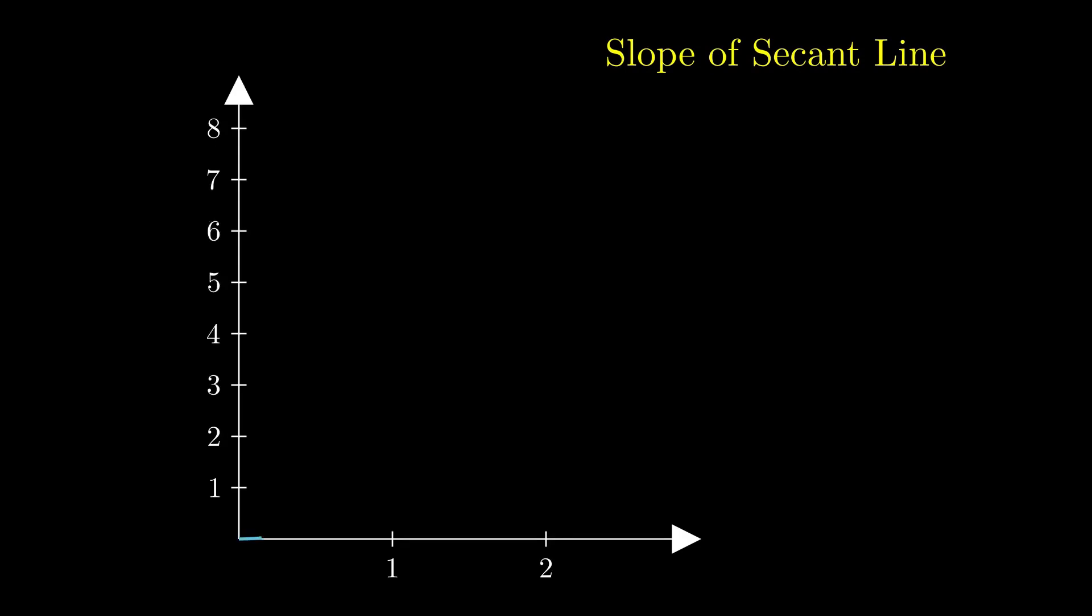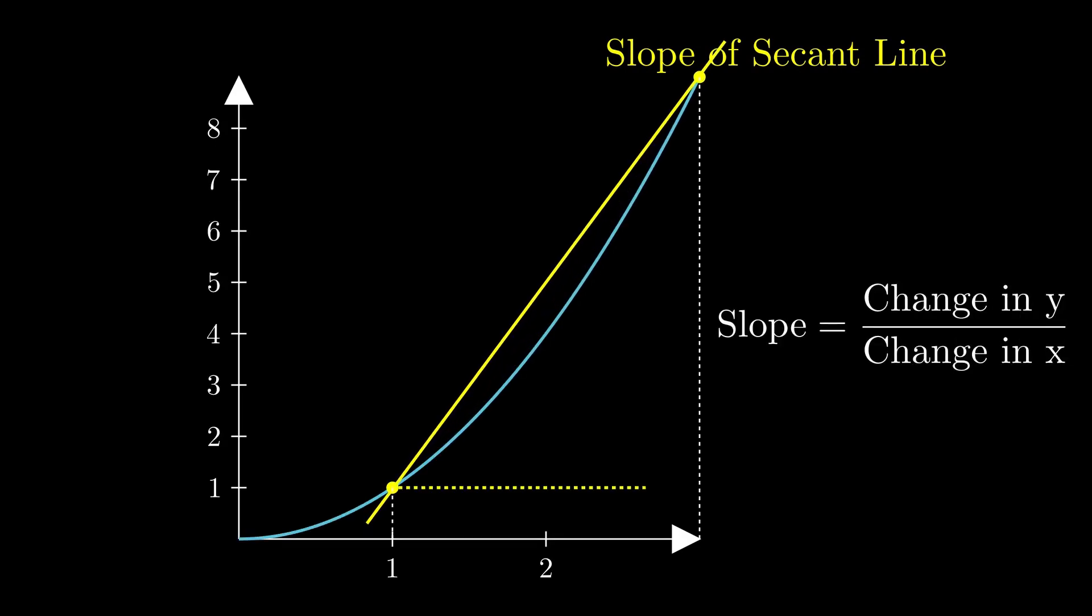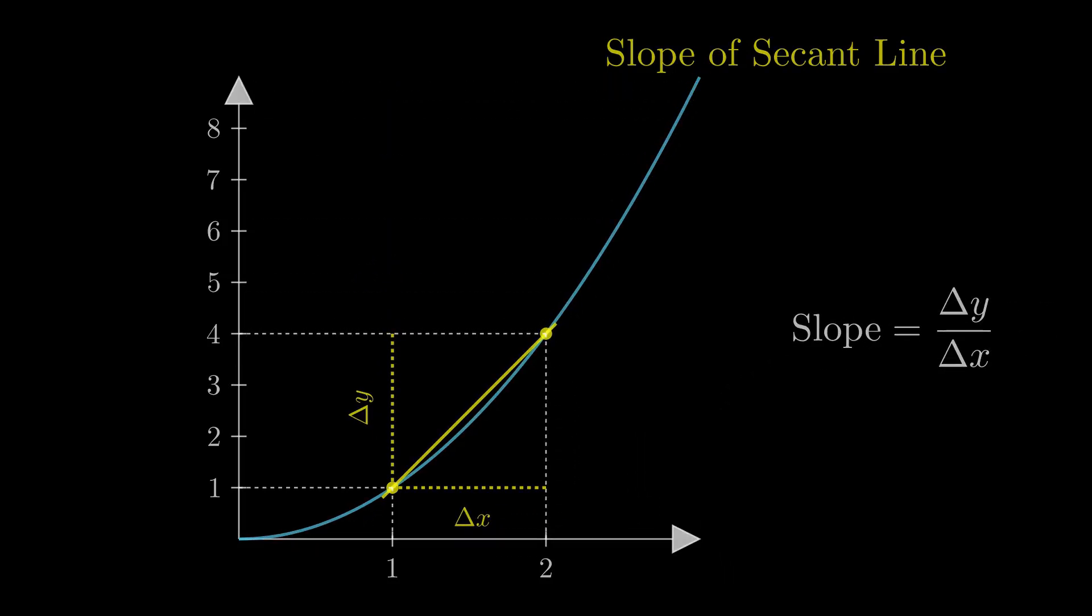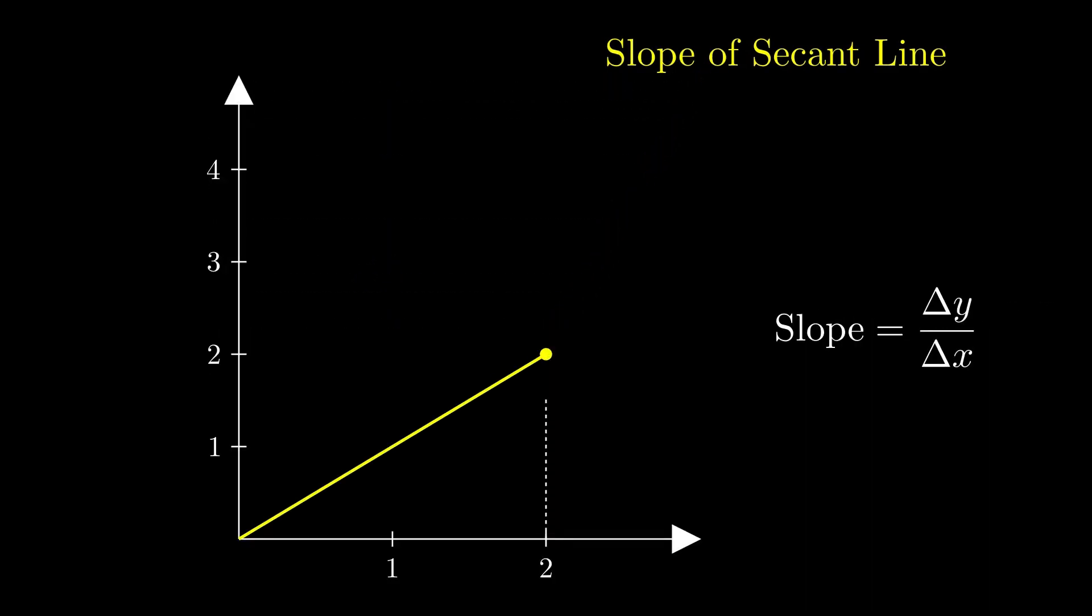This property comes from the definition of the slope, as it is defined to be: for some change of x, how much does the y change. For the same change of x, greater change in y means a larger slope, and smaller change in y means a lesser slope.